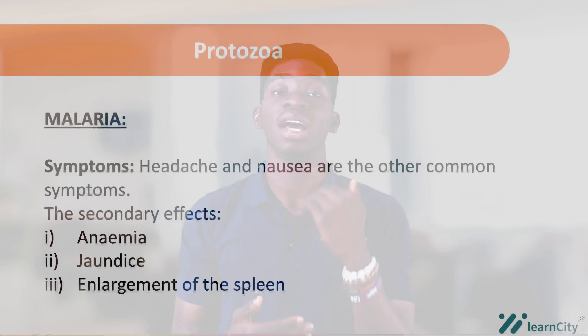These symptoms occur when merozoites destroy the red blood cells. The merozoites are released into the body, and when they destroy the red blood cells, it causes toxins to be released into the blood, which brings about these symptoms. Some secondary effects when malaria worsens include anemia, jaundice, and enlargement of the spleen.